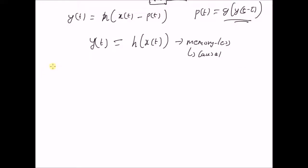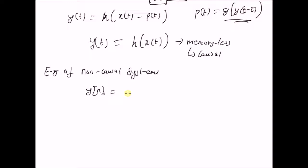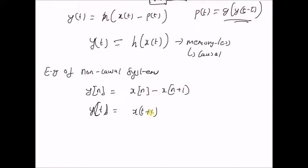Now let us look at some examples of non-causal systems. Even though causal systems are very important in the theory of systems, there are many systems in the real world that are not necessarily causal. For example, consider the relation y(n) = x(n) − x(n+1), which takes the difference between the current input and a future input x(n+1). In this case, the output y(n) depends not only on the current input but also on the future input, so this is not a causal system. Similarly, when the output y(t) = x(t+1) or any value greater than 0, it is a transformation of the future input, and this is also a non-causal system.